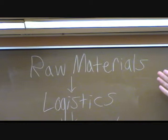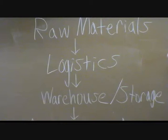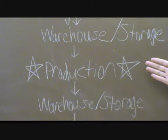Another important aspect of marketing is distribution and cost. Raw materials are the components of a product — not the full product, but the parts needed to make it. Raw materials are transferred by logistics — usually a truck or semi — to a warehouse or storage facility, where they wait until they enter the production phase. The production phase is one of the most important phases, because that's where raw materials become the actual product.